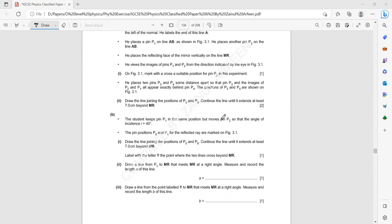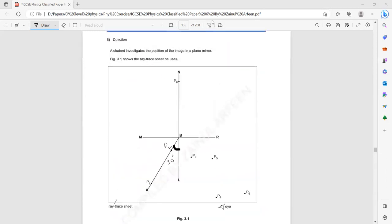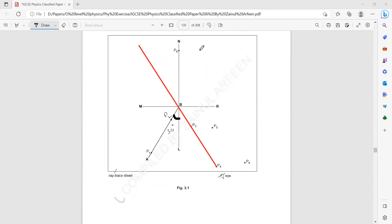Then student keeps P1 in the same position but moves P2 so that the angle of incidence is 40. The pins P5 and P6 are the reflected marks at 3.1. Draw a line joining P5 and P6 and continue until at least 7 cm beyond MR. And label the point where the two lines intersect beyond MR. So we join P5 and P6 and continue this line beyond MR. And the point where this line intersects the first one, label that as Y. You just have to follow the instructions.